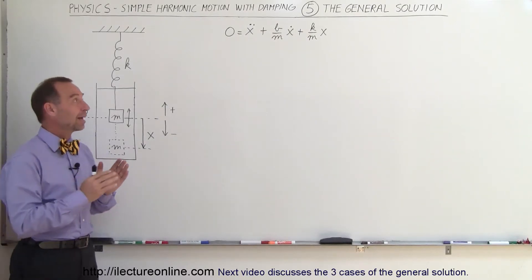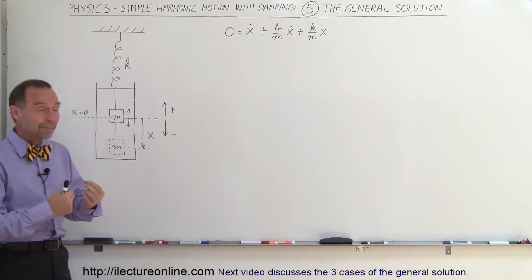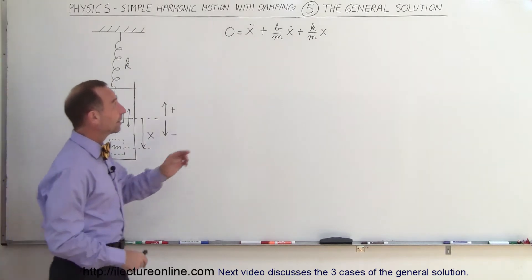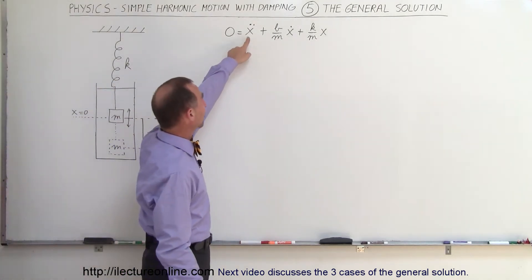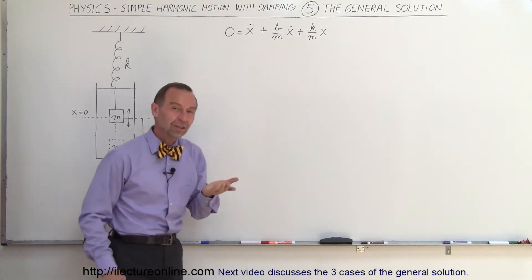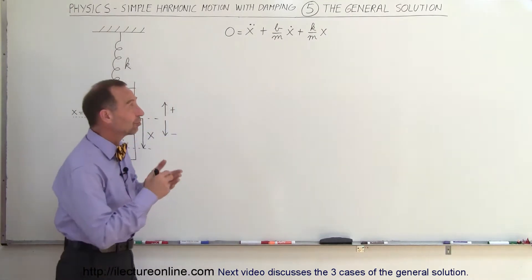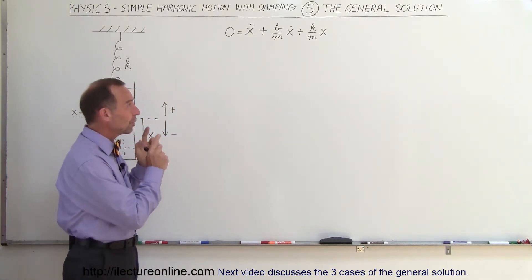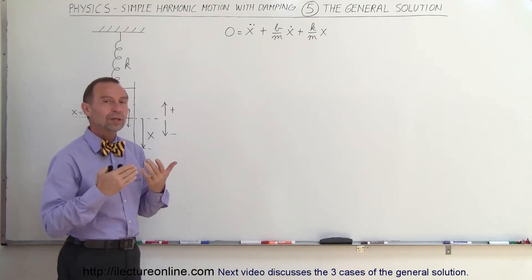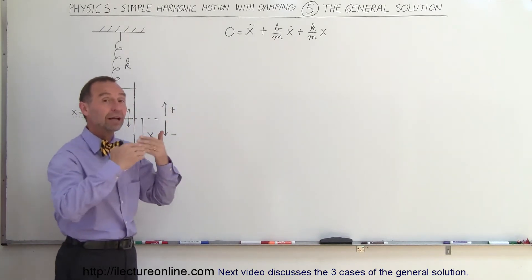Welcome to Electron Line. Now that we have found the general equation for an oscillatory system with damping, let's find a general solution to that equation. Notice that x double dot represents acceleration and x dot represents velocity — x double dot is the second derivative of position with respect to time, and x dot is the first derivative of position with respect to time. When you look at that, it should look a lot like a quadratic equation.